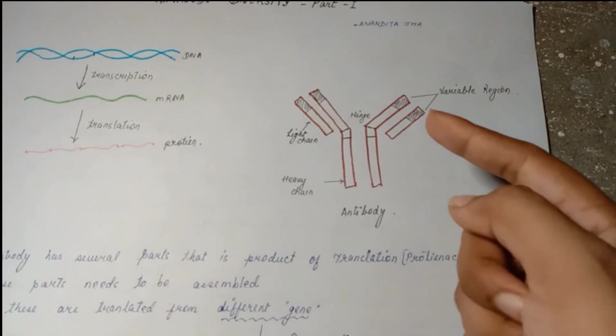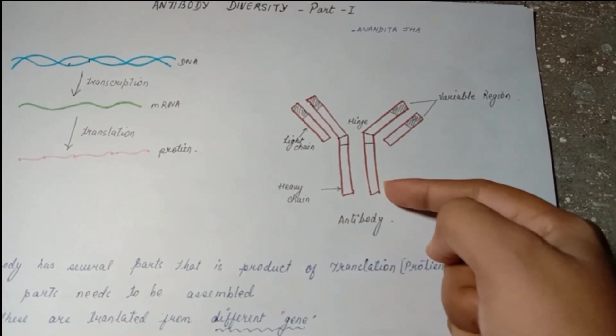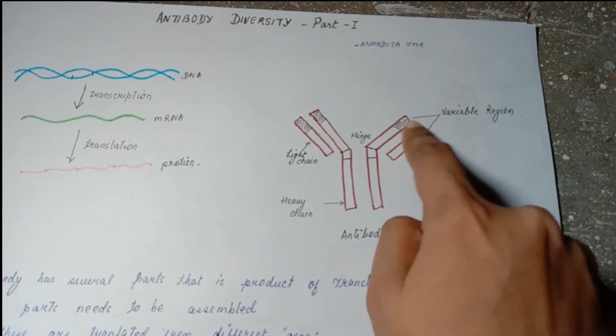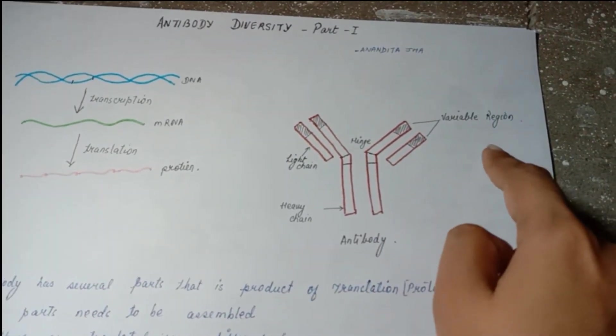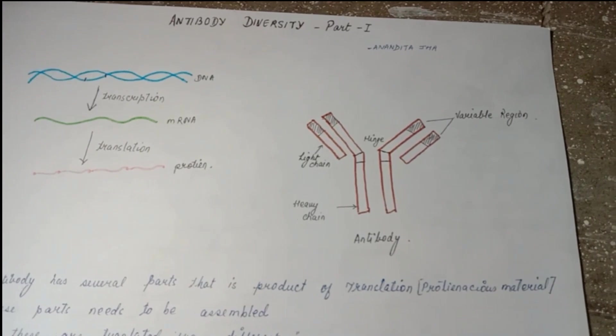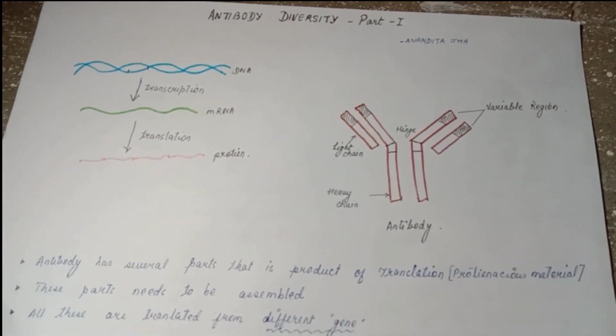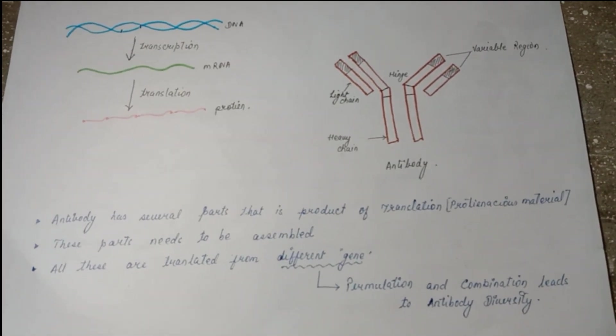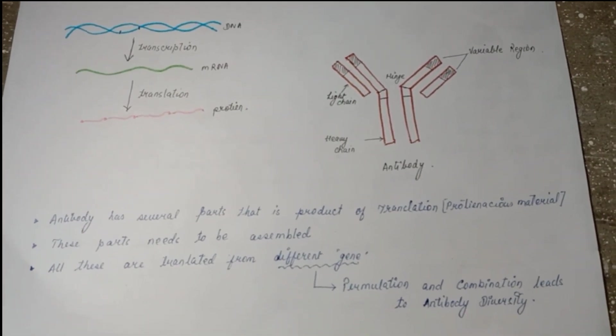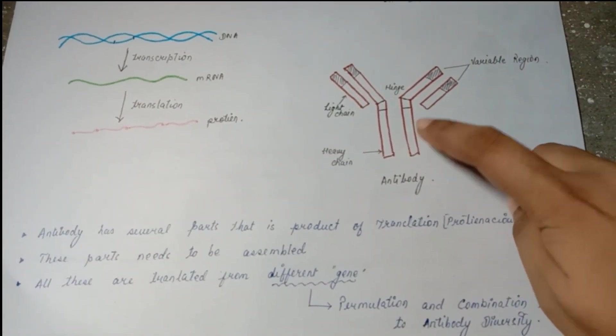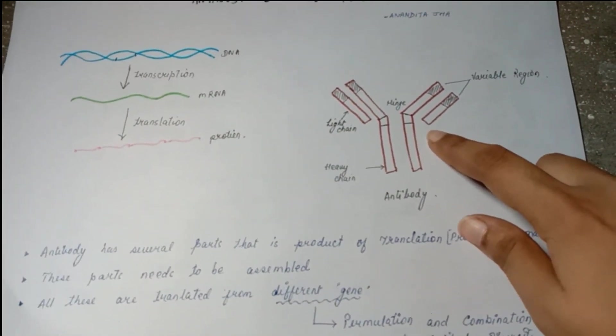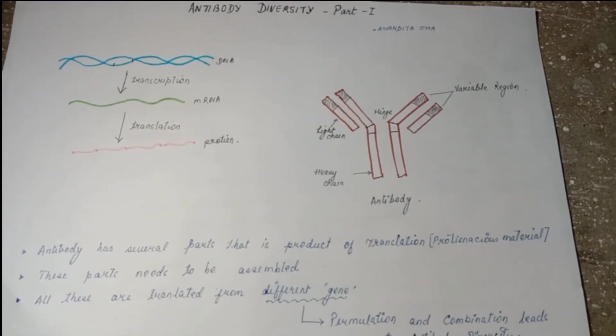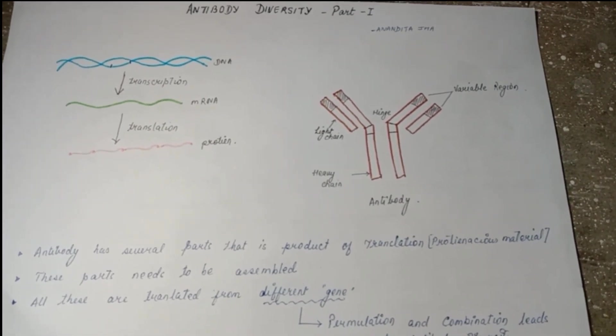See this image of antibody. What we see here is this is the heavy chain, this is the light chain, and this part is the variable region of heavy as well as light chain. There are many theories about how these diverse formations of antibodies are happening.